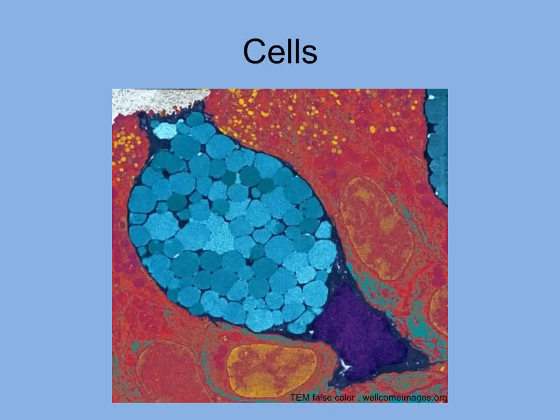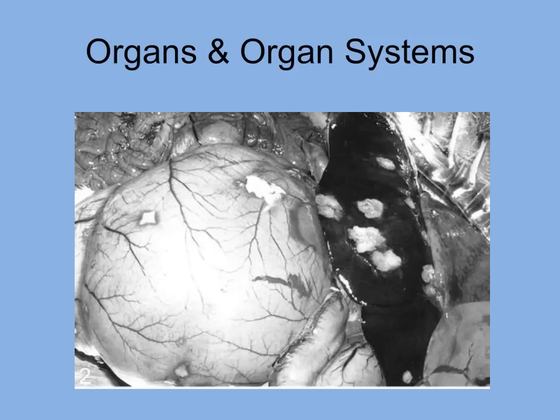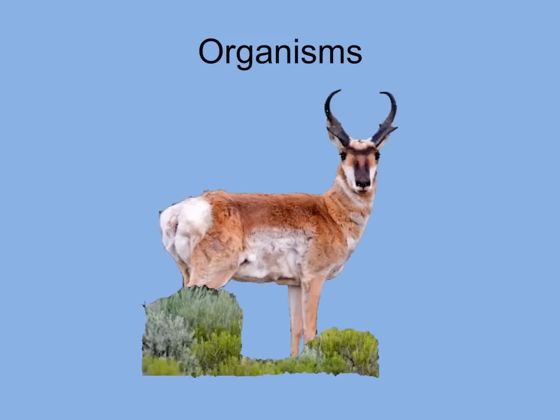Goblet cells, like this one, produce mucus to protect various organs such as the intestine. Tissues are associations of cells — millions of cells form the tissue lining the small intestine. Organs perform certain functions for living organisms and are composed of tissues. The stomach, liver, intestines, and other organs are part of the digestive system.